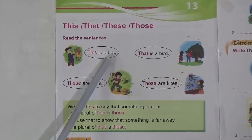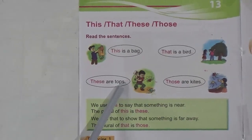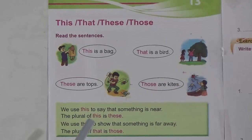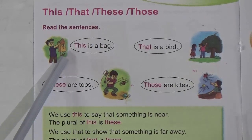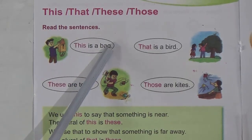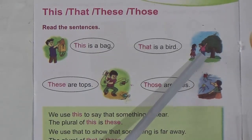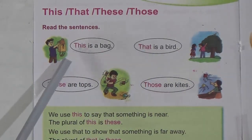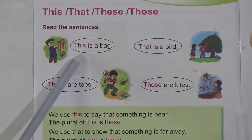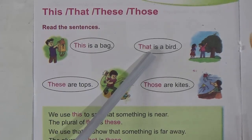This is a bag. That is a bird. These are tops. Those are kites. Now look — in the first picture the bag is near the boy, so we use 'this': this is a bag. In the next picture the bird is far away from them, so we use 'that': that is a bird. So we use 'this' to indicate when something is near us, and we use 'that' when something is far away from us.